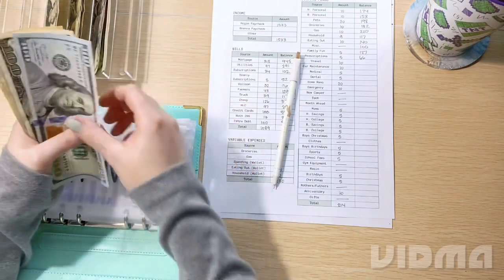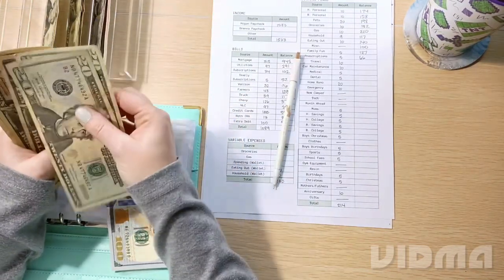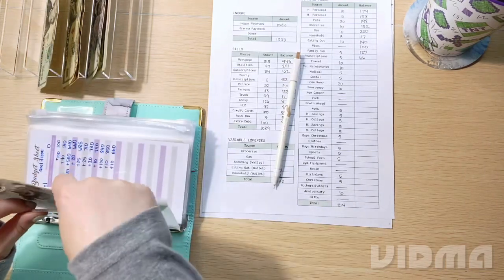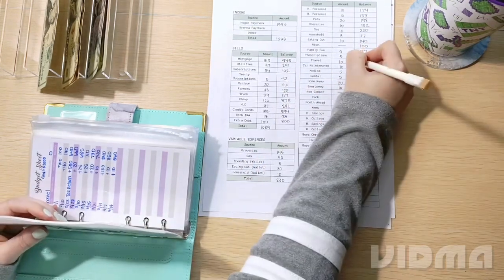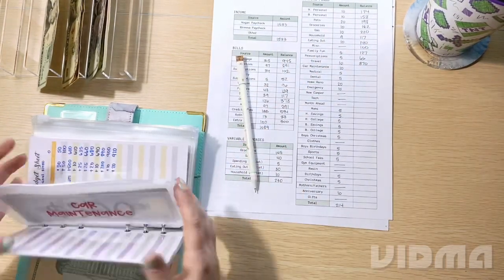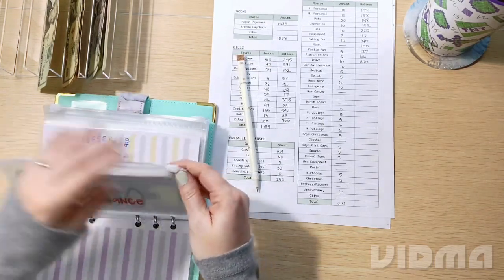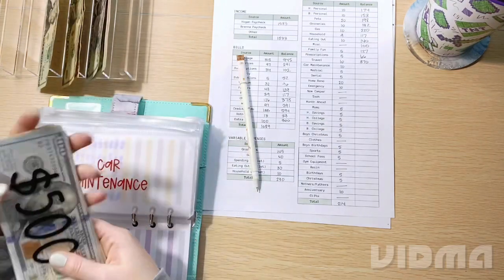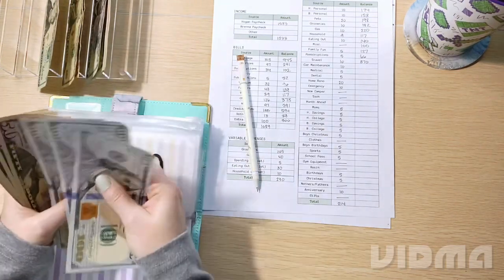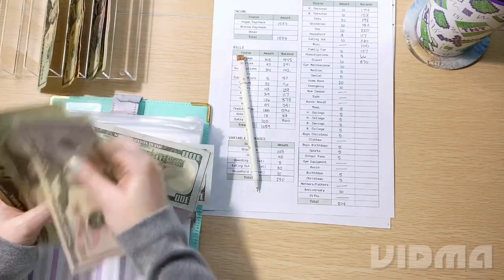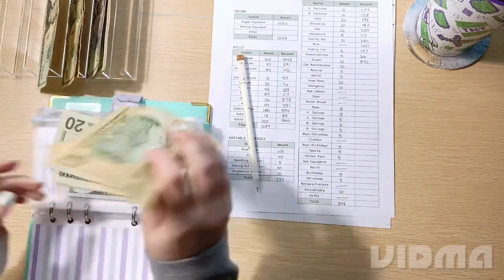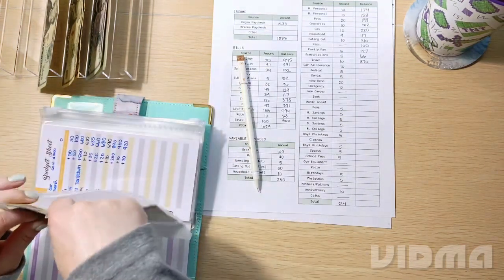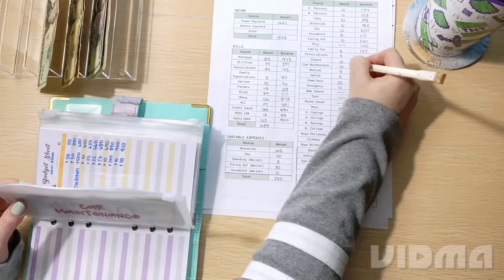Travel today is going to get $10. And now it has $870. Car maintenance is getting $10 also. So now car maintenance has $930. So that is exciting. We are $70 away from my goal, and then we can leave that one alone until we need it.